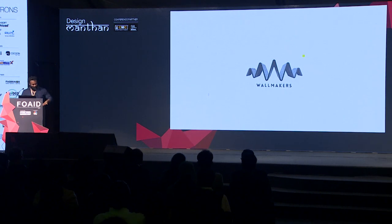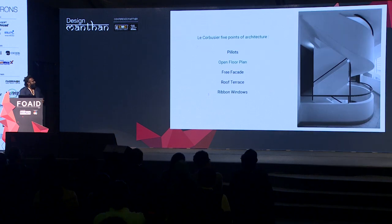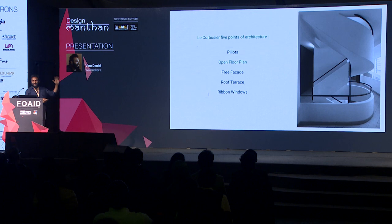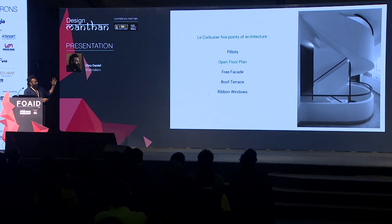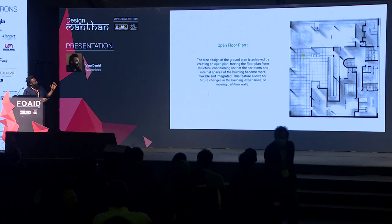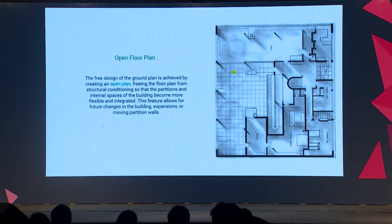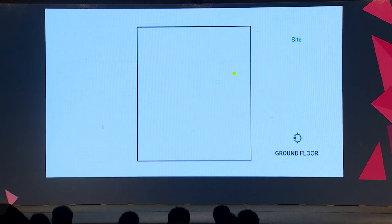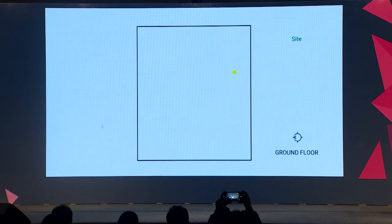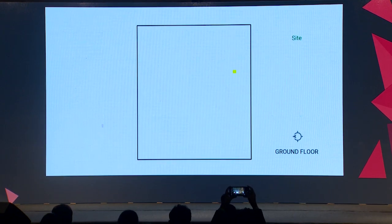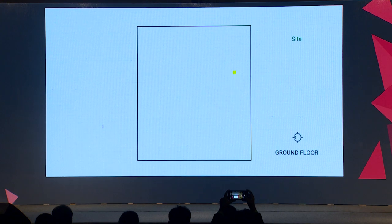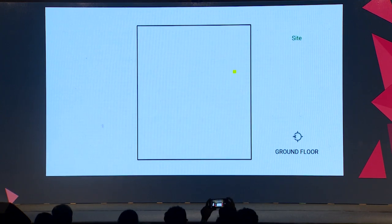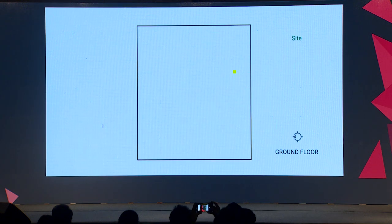The free plan is where I am trying to see where we differ from the typical idea of columns and plans being separate. In this particular project, the plot was a flooding plane and the soil's bearing capacity was less. We generally build load-bearing structures and don't go much for column-beam structures, but in this scenario I had to, because it was a flooding plane.